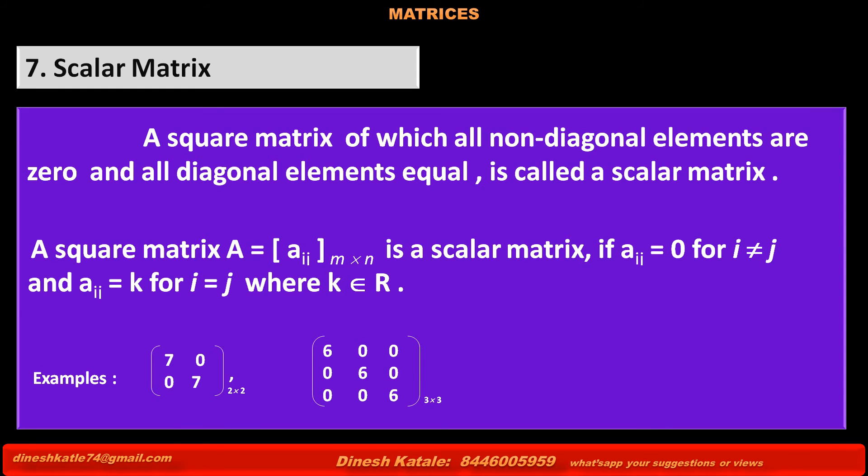In second matrix which has order three, all non-diagonal elements are zero and diagonal elements are equal, each one is equal to six. Therefore, it is also a scalar matrix.